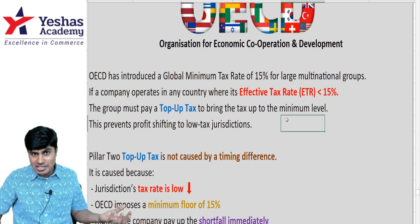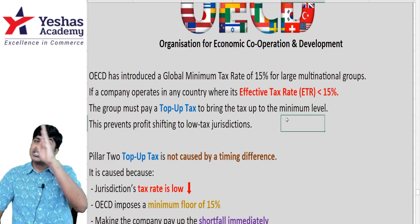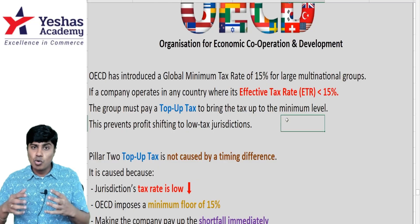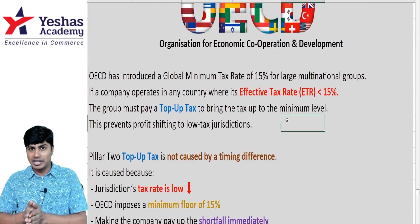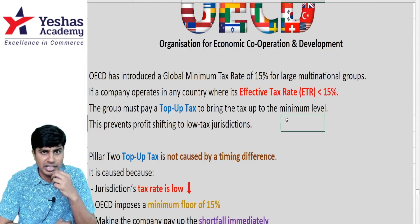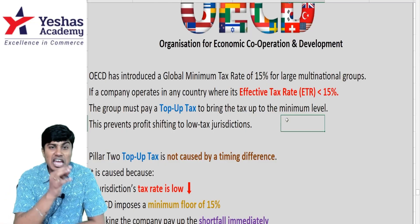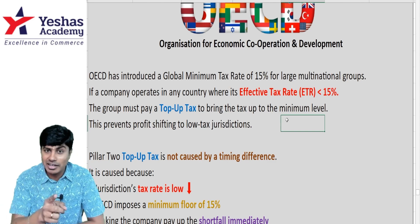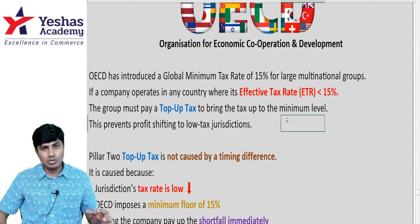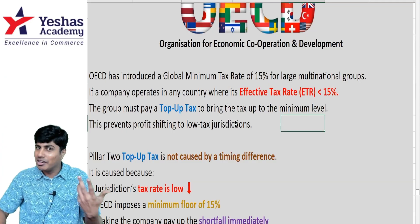This Global MAT is applicable if the effective tax rate in a country is less than 15%. Let's say I am TCS, an Indian company. In India, the tax rate is 40%, but I opened a subsidiary in Dubai, UAE, where the tax rate is 9%. OECD tells that if the effective tax rate in any country is less than 15%, that company would have to pay top-up tax to bring it up to 15%.